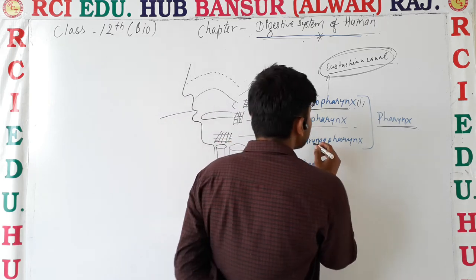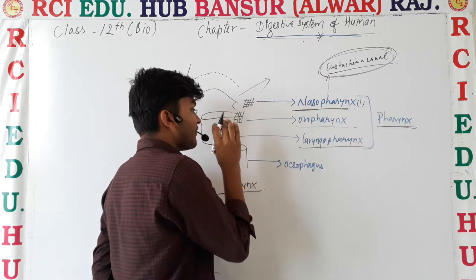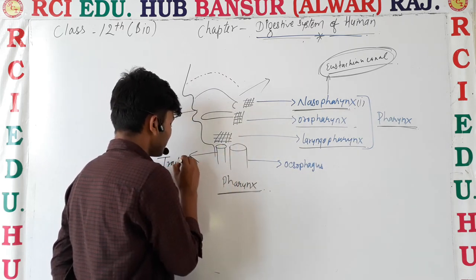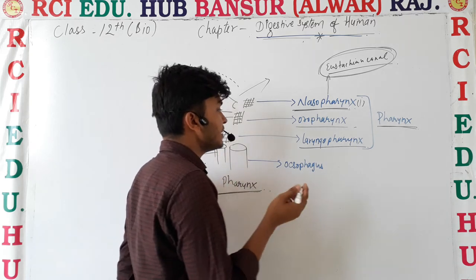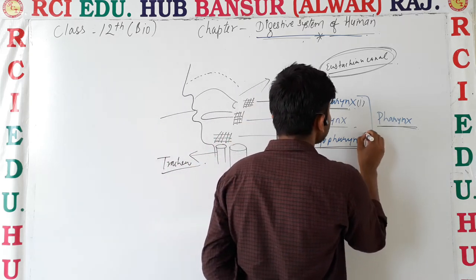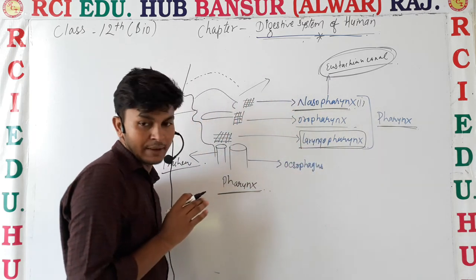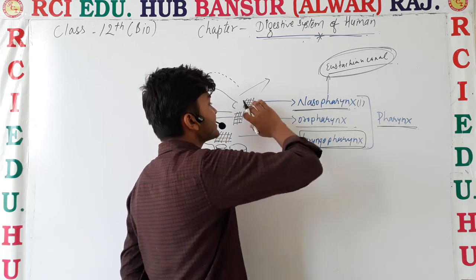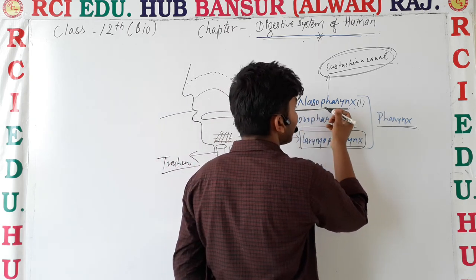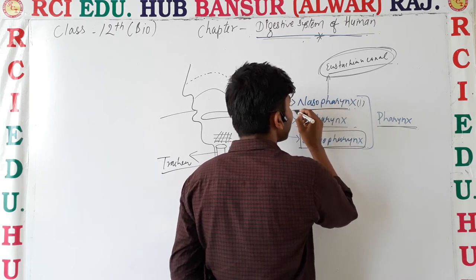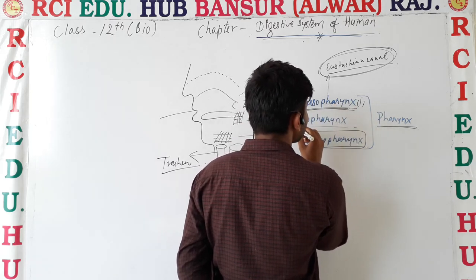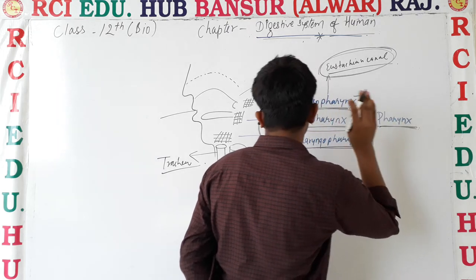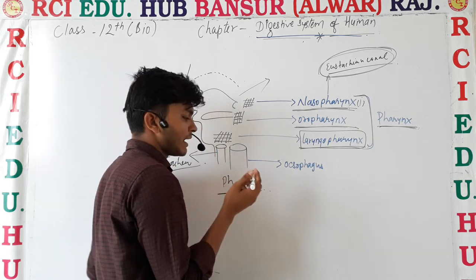The third part is the laryngopharynx. The pharyngeal region which is the laryngopharynx completes the structure of the pharynx. So in summary, the three parts are: nasopharynx, oropharynx, and laryngopharynx.